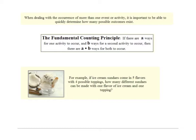The Fundamental Counting Principle is really simple. It says if there are A ways for one activity to occur and B ways for a second activity to occur, then you multiply A times B and that will be how many ways it is for both of them to occur. For instance, if we have an ice cream sundae and they come in five flavors with four possible toppings, then if we multiply five times four together, we will have the number of different sundaes that can be made with one flavor of ice cream and one topping.